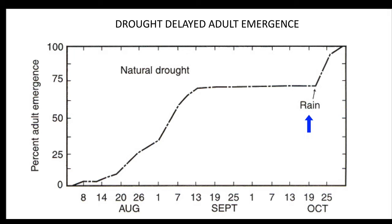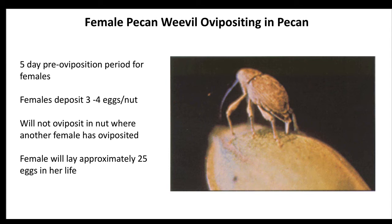This late emergence can have a negative impact on our management. Once they emerge, females will migrate to the trees. The female will lay three or four eggs per nut, seal up the hole, and she will infest probably about 25 pecans during her life.